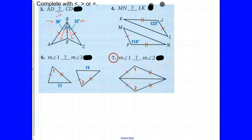Let's look at question number four. We have one pair of congruent sides and a second pair of congruent sides. We're looking at the angles between them: 114 degrees and 123 degrees. Since 123 degrees is more than 114, side KL is going to be longer than the other third side, MN. So MN is less than LK.